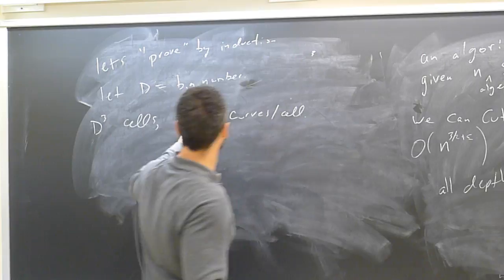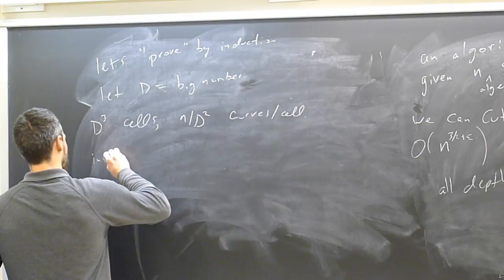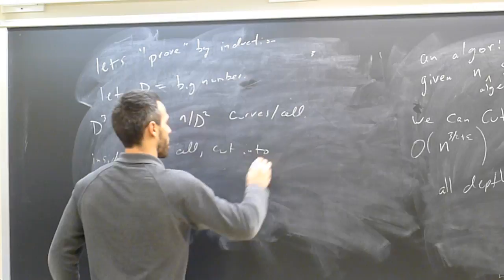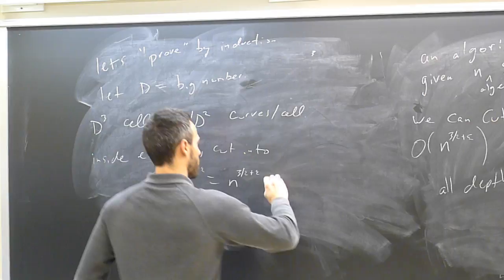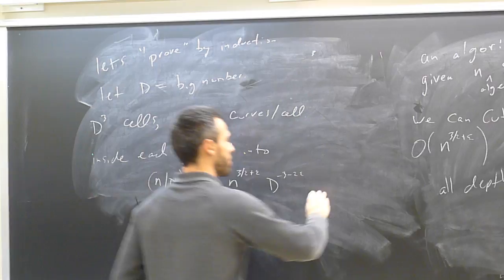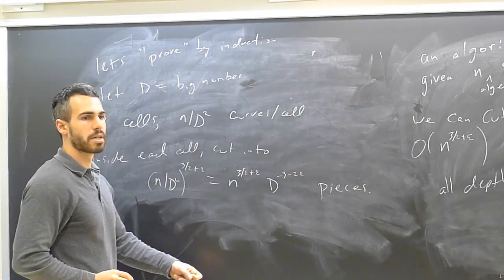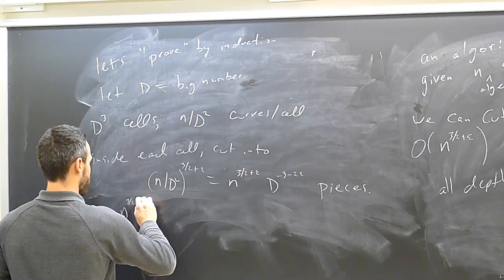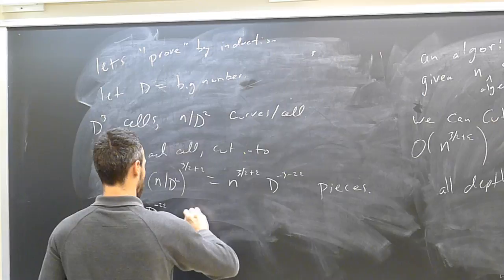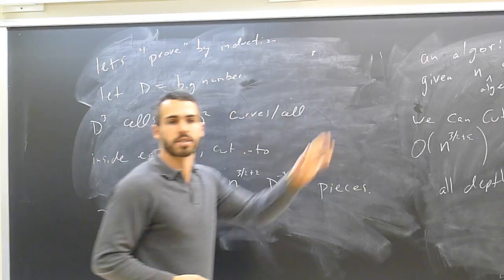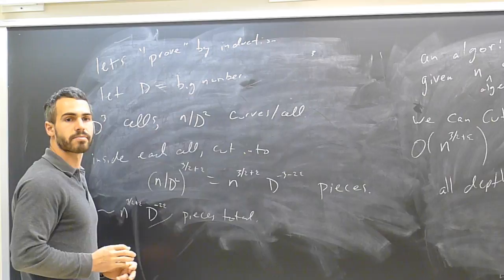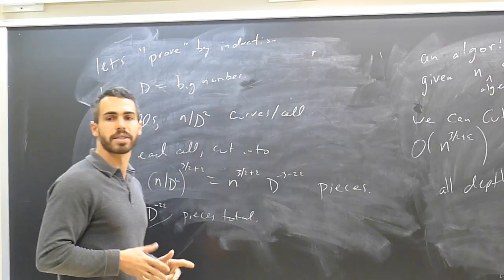So I get D³ cells and n over D² curves per cell. If I assume that I know that this is true for smaller numbers, well, n over D² is a smaller number, so I can apply this. So I cut inside each cell. I cut into n over D² to the 3/2 plus epsilon. This is n to the 3/2 plus epsilon times D to the minus 3 minus 2 epsilon. That's the number of pieces I have that was in one of the cells times D³ cells. This means I have n to the 3/2 plus epsilon times D to the minus 2 epsilon pieces total. So that's great.